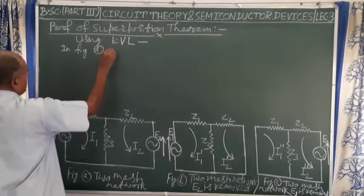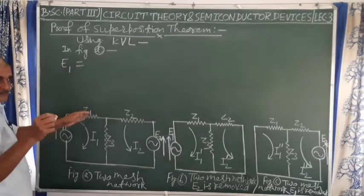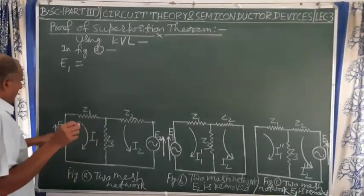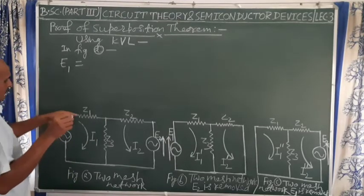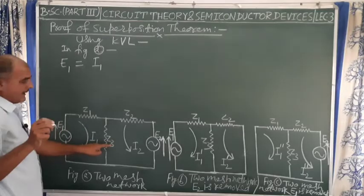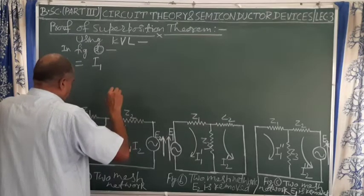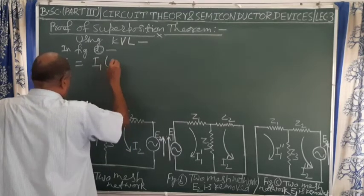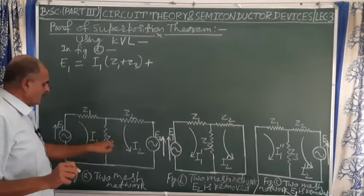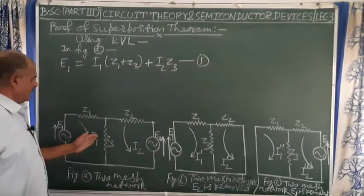In figure A, in the two-mesh network, applying KVL to the left loop, we have e1 equals the product of current multiplied by impedances. Here z1, z2, and z3 are impedances. So e1 = i1·z1 + i1·z3, that is i1·(z1 + z3), plus i2·z3. This is equation number 1 for the left mesh of figure A.